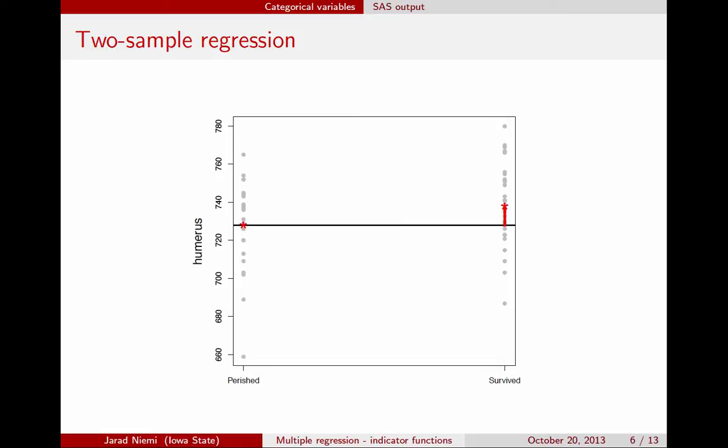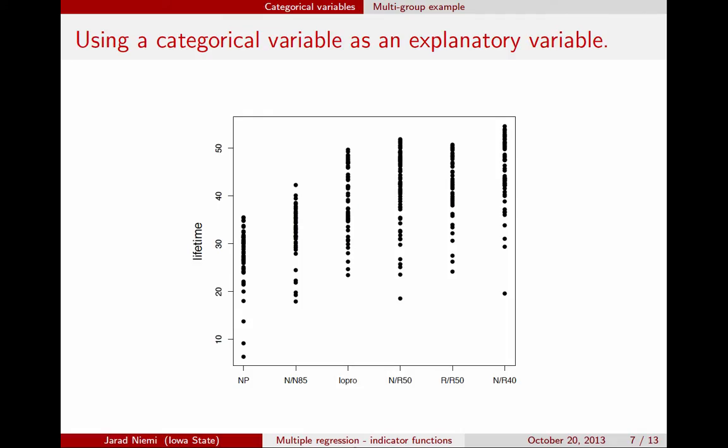This is what the use of a categorical explanatory variable looks like in regression through the use of dummy variables and indicator functions. That example used two groups, and now we'll move on to an example with more than two groups. Here's an example we've seen before — a canonical example where we used ANOVA — looking for differences amongst any of the groups. We're now going to treat this data set as a regression problem by again choosing one of the groups as the reference group. In this case, we're going to choose the nN85 group as the reference group, because this was the group that had the standard lab treatment in terms of diet.